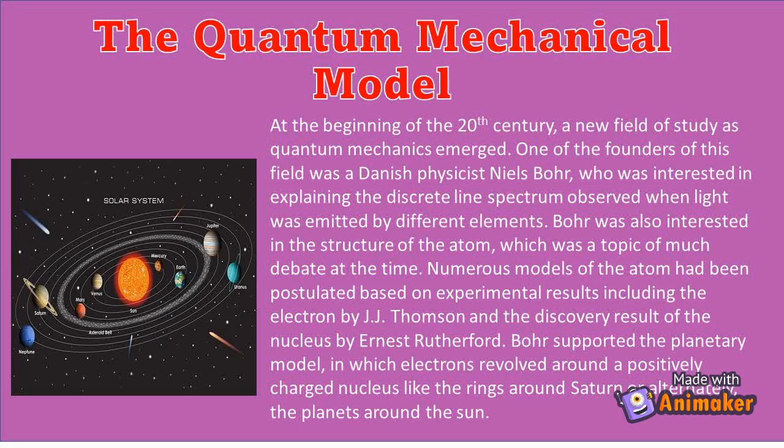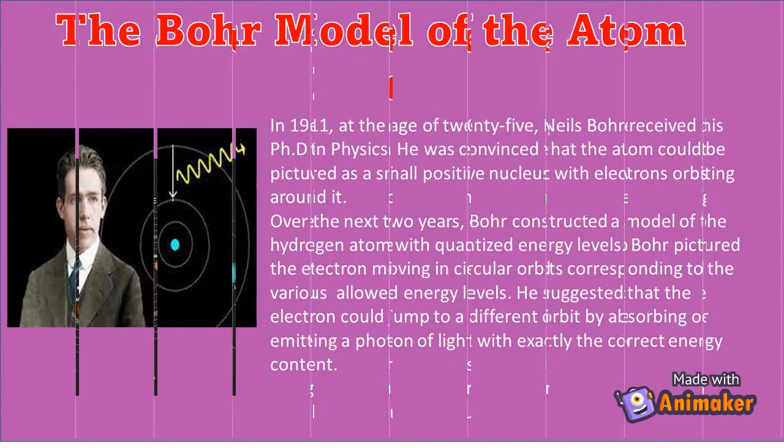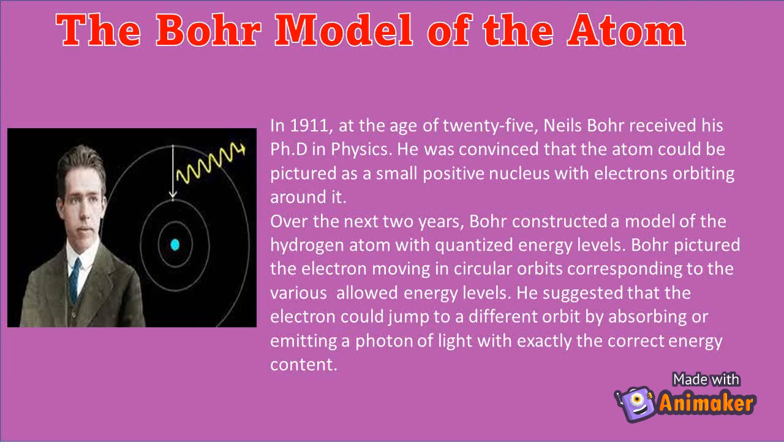Bohr supported the planetary model in which electrons revolved around a positively charged nucleus like the rings around Saturn or alternately the planets around the Sun. In 1911, at the age of 25, Niels Bohr received his Doctor of Philosophy in Physics. He was convinced that the atom could be pictured as a small positive nucleus with electrons orbiting around it. Over the next two years, Bohr constructed a model of the hydrogen atom with quantized energy levels.